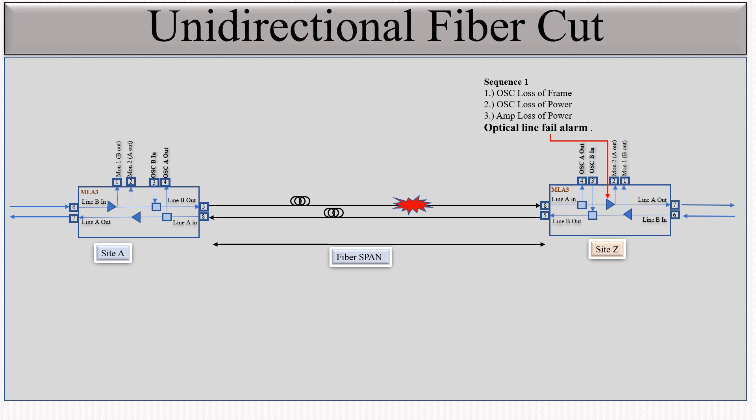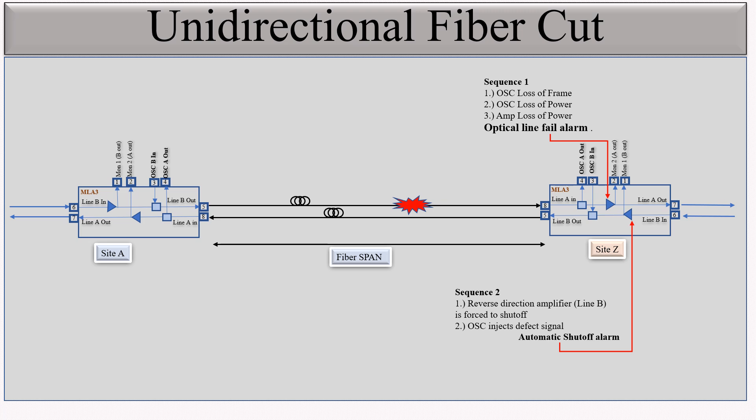The amplifier declares that it is not receiving any signals, and the optical line fail alarm will appear. On the opposite direction amplifier, there will be an automatic set-off — the reverse direction amplifier is forced to set off because it is not receiving any signal, so there is no point in transmitting. We will get the automatic set-off on that amplifier — sequence 3. Here we will get complete loss of C-band due to the upstream amplifier being set off, but the OSA signal is still present. This amplifier will set off, but the OSA signal will still be injected into the fiber and received on this port.